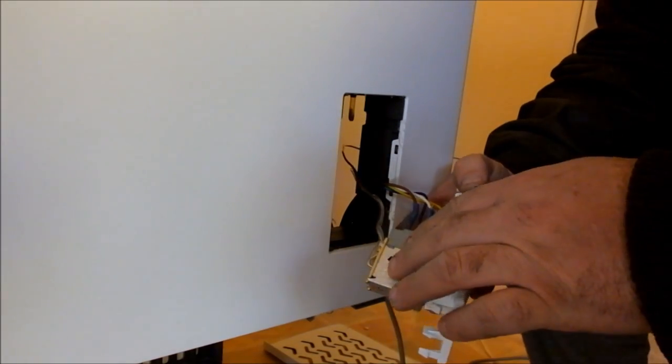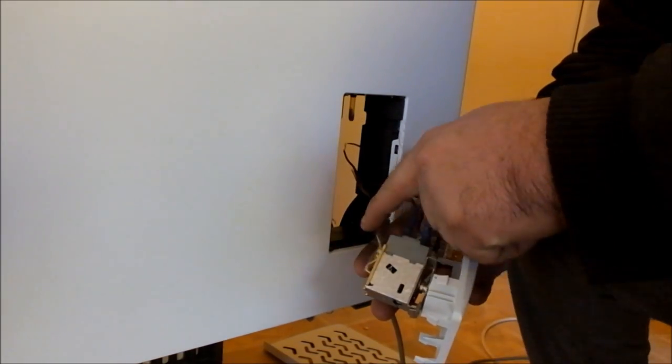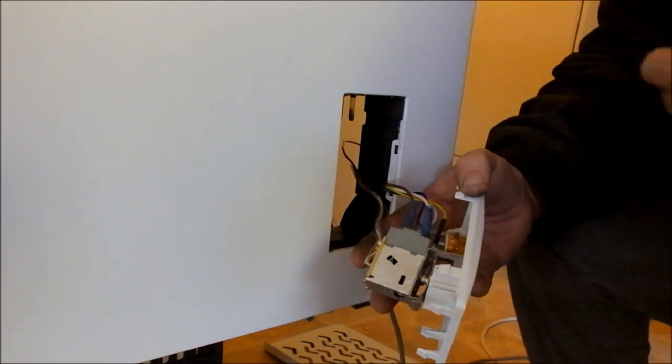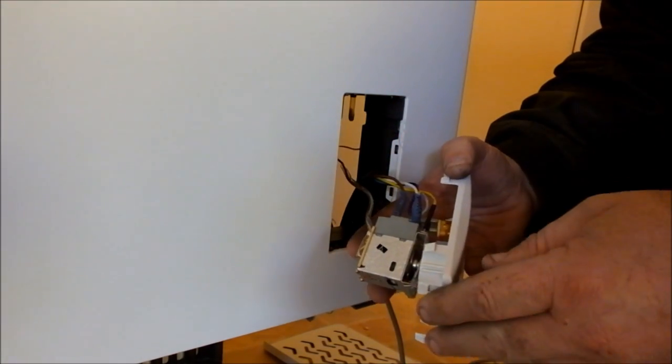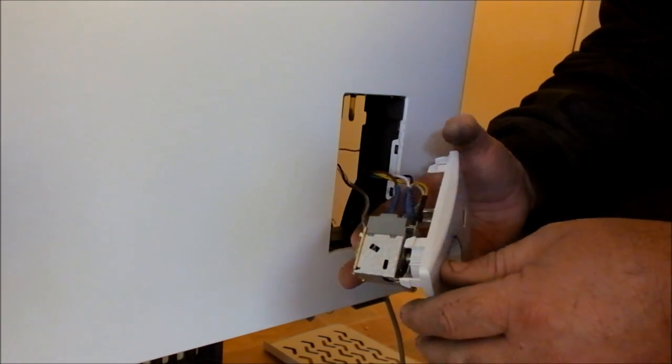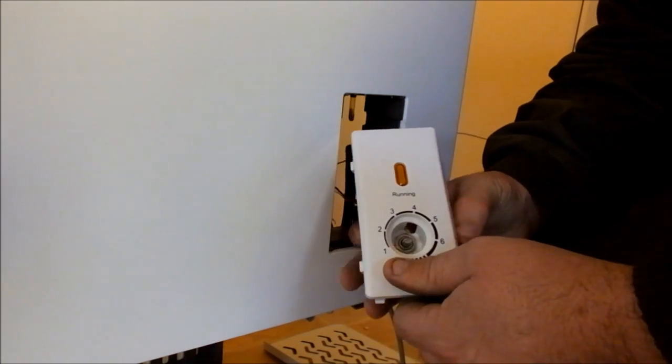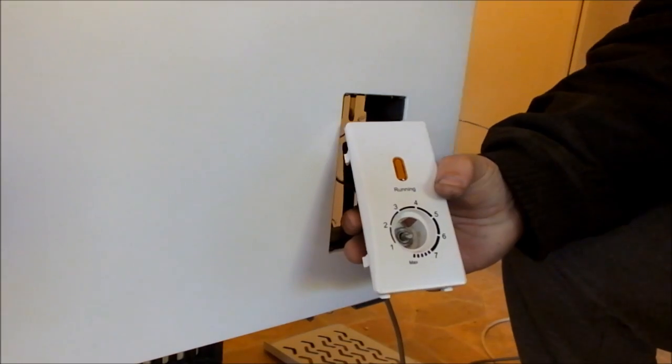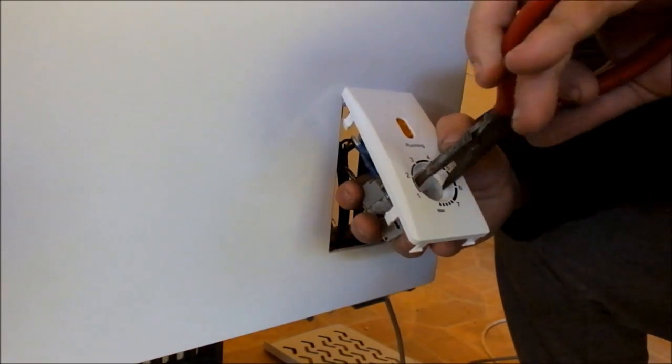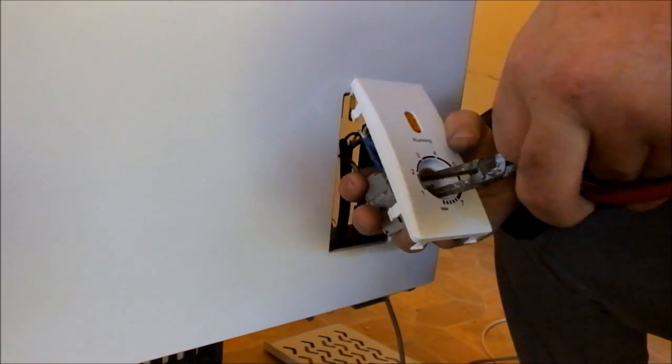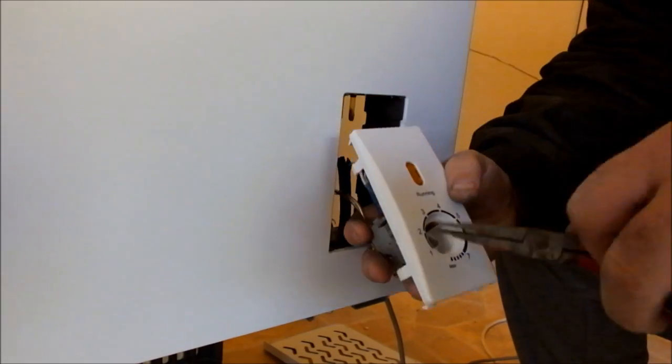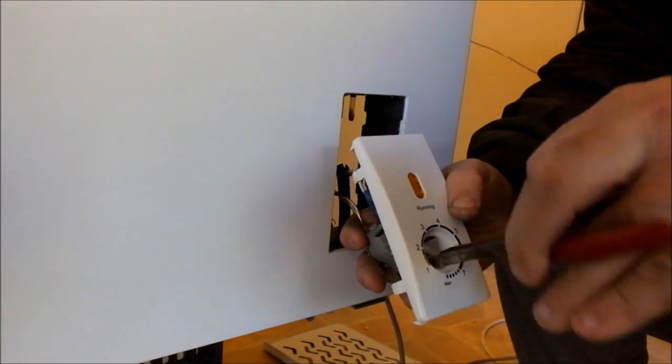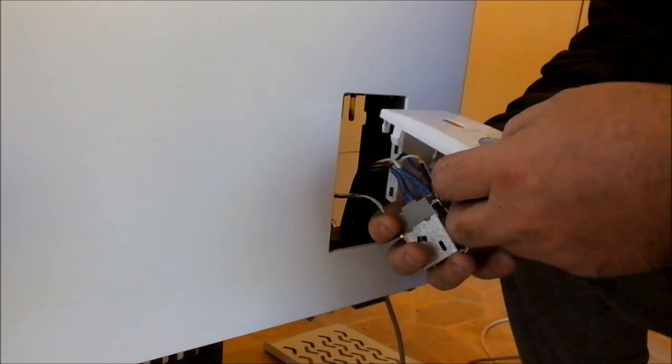Get a screwdriver in to pry the fascia out. And there's your thermostat. That's the probe that goes up inside the freezer for the temperature. And we turn the fascia around and see the nut holding that shaft in there.